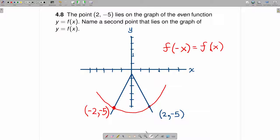And that's still another way of seeing that negative 2, negative 5 will be another point on this particular function. So the answer to the question is the second point that is on the function is negative 2, negative 5.